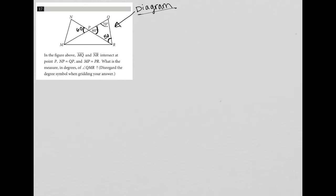Now let's start reading the actual question. The question says, in the figure above, line segment MQ and line segment NR intersect at point P. That's how we know that those 60s are vertical angles. Then it says NP equals QP. I can make a little symbol here to represent that these two side lengths are congruent. And MP equals PR, so that means these side lengths are also congruent. What is the measure in degrees of angle QMR? If I follow from Q down to M and over to R, the angle made is this angle here — that's the question mark angle.